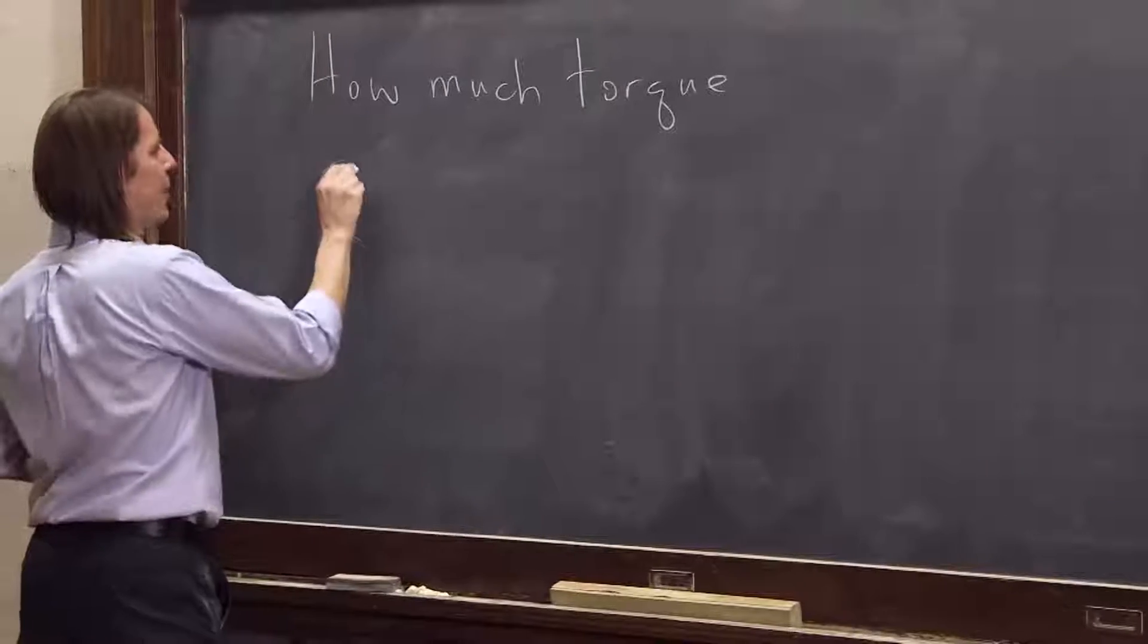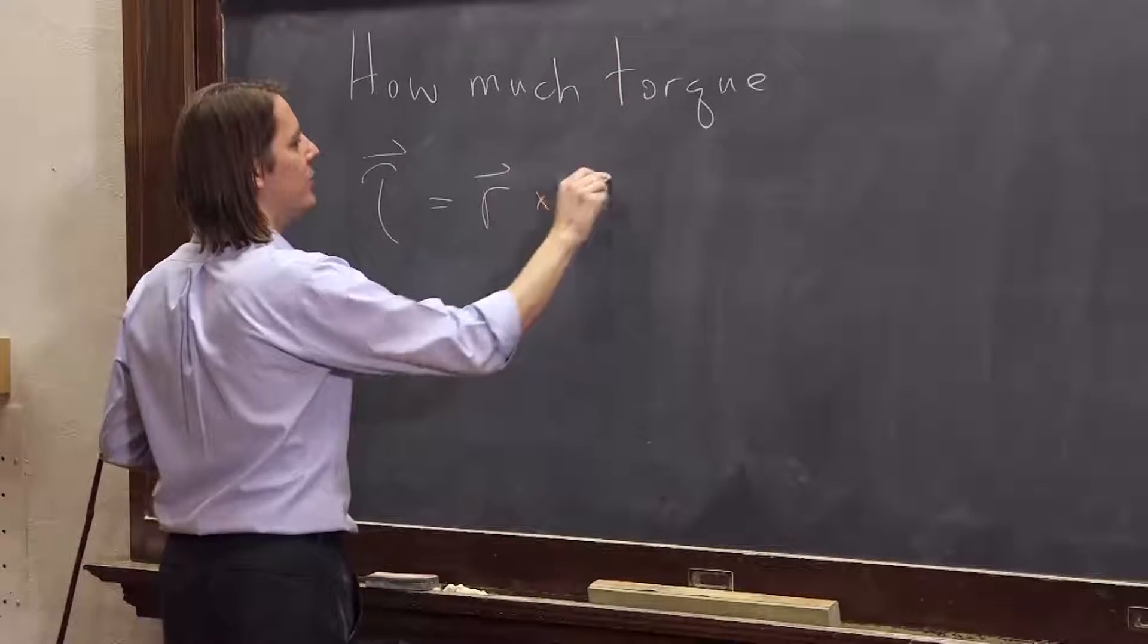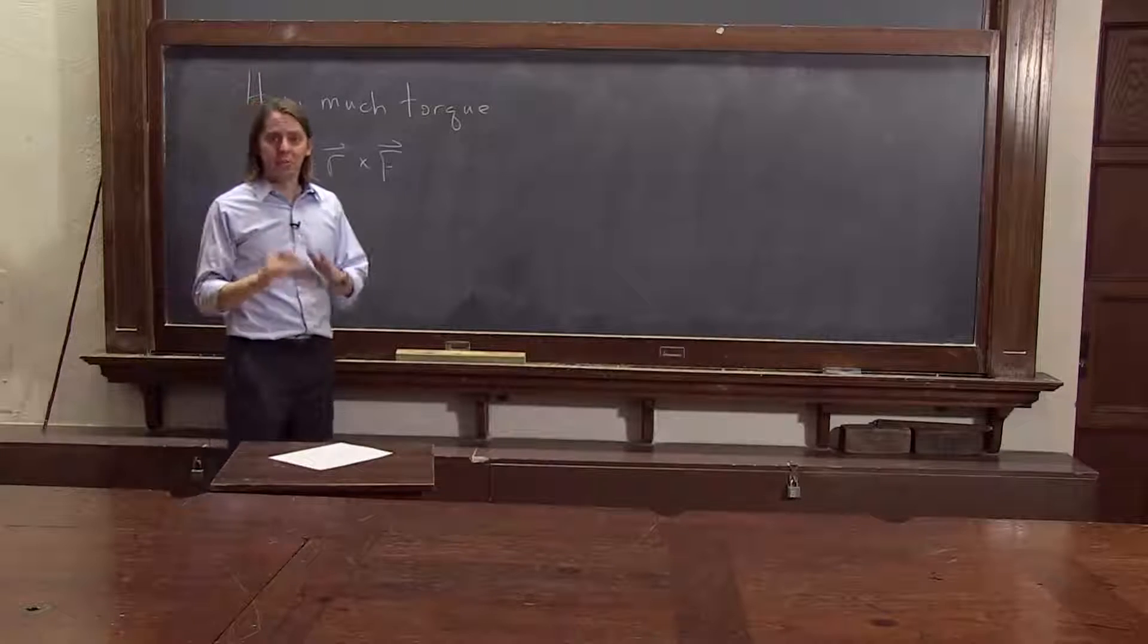Torque, if we describe it as a vector, is usually the vector tau and it's equal to R cross F. Now let's think about what that really means for a second.